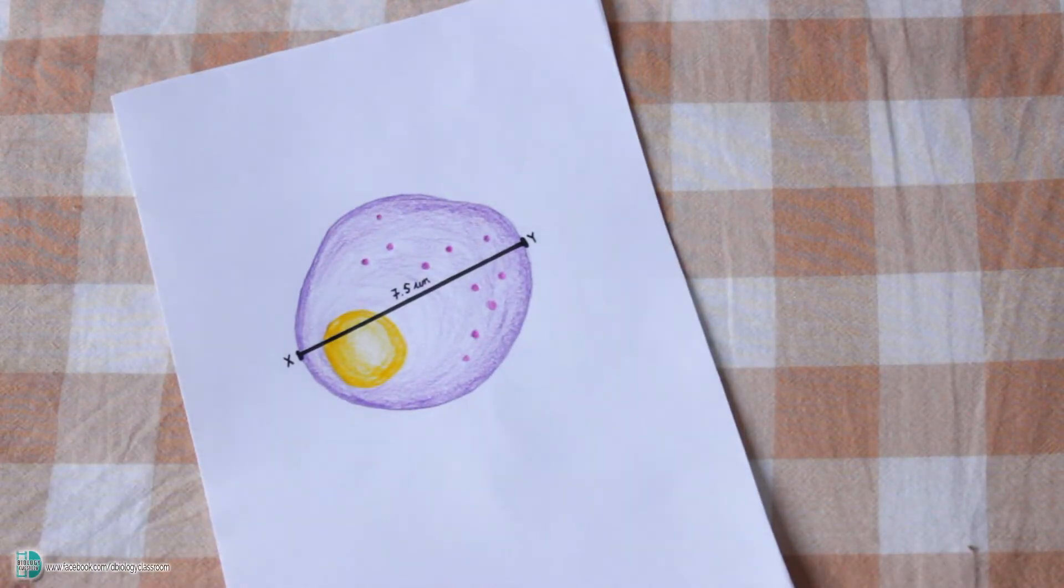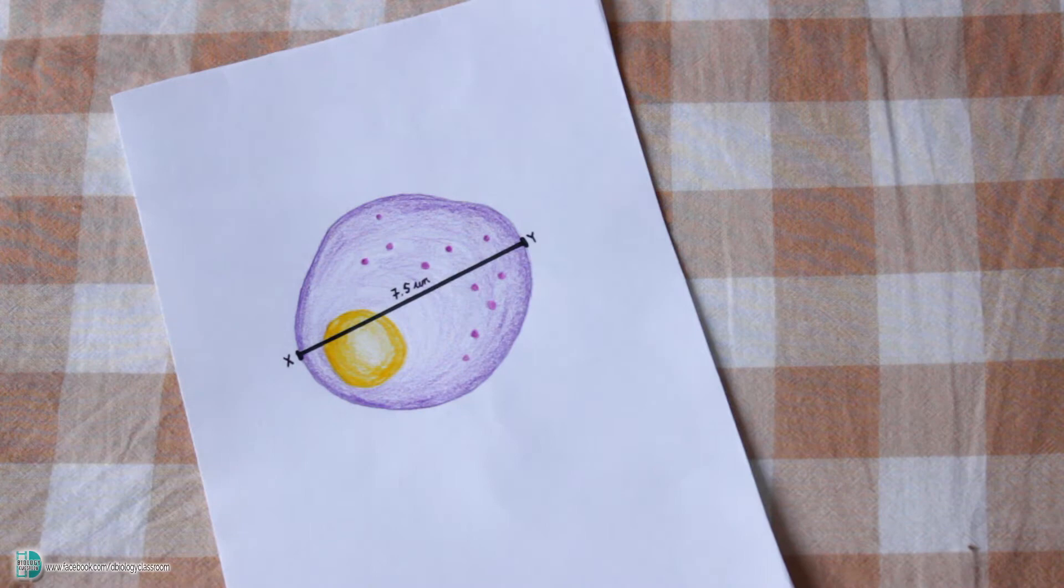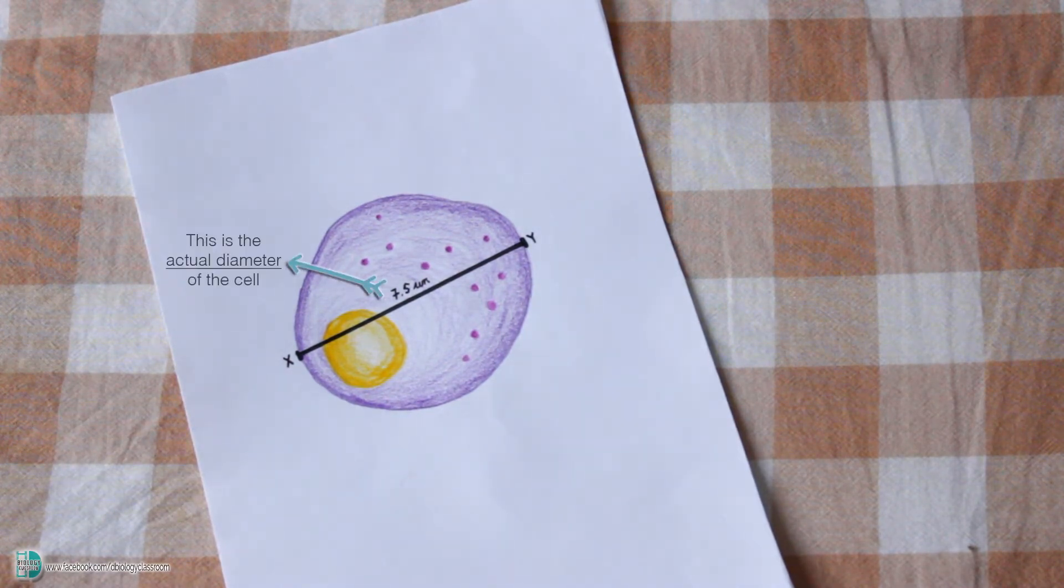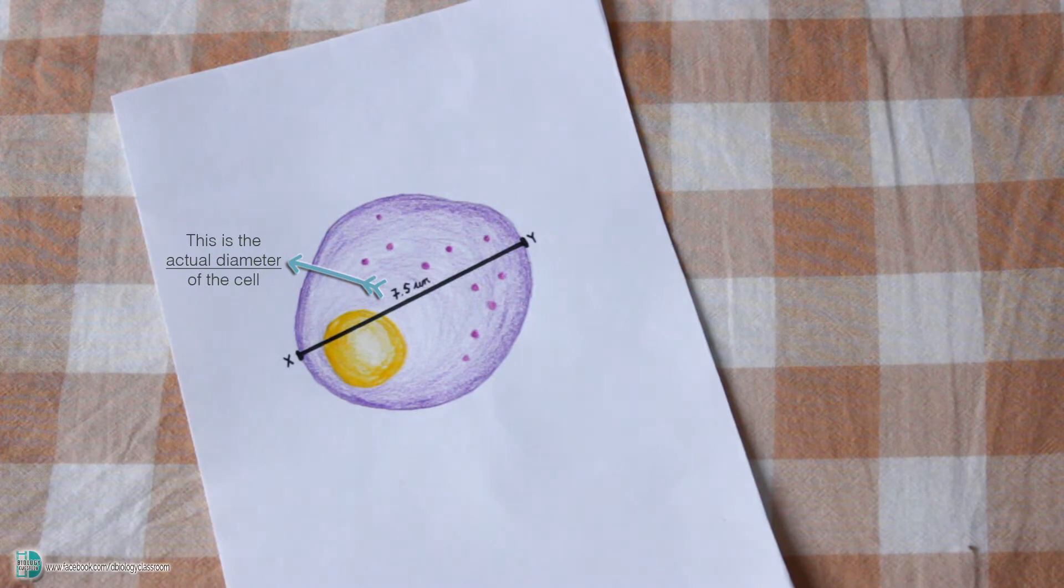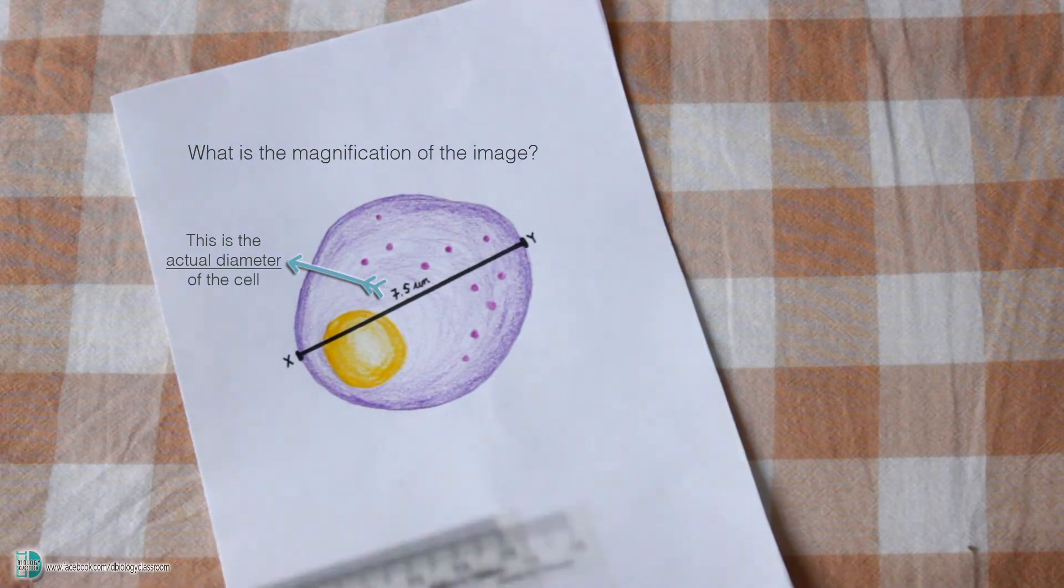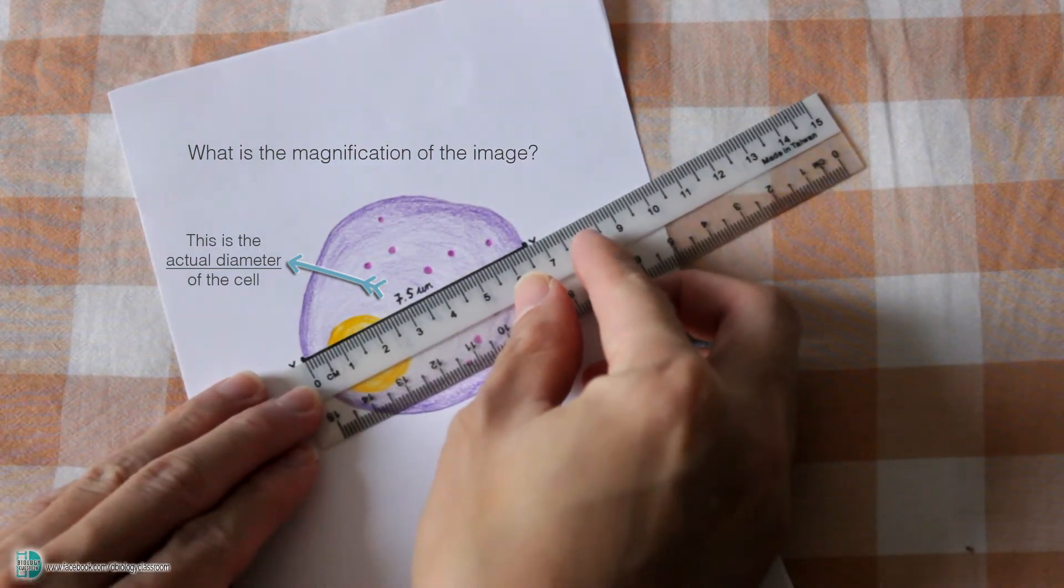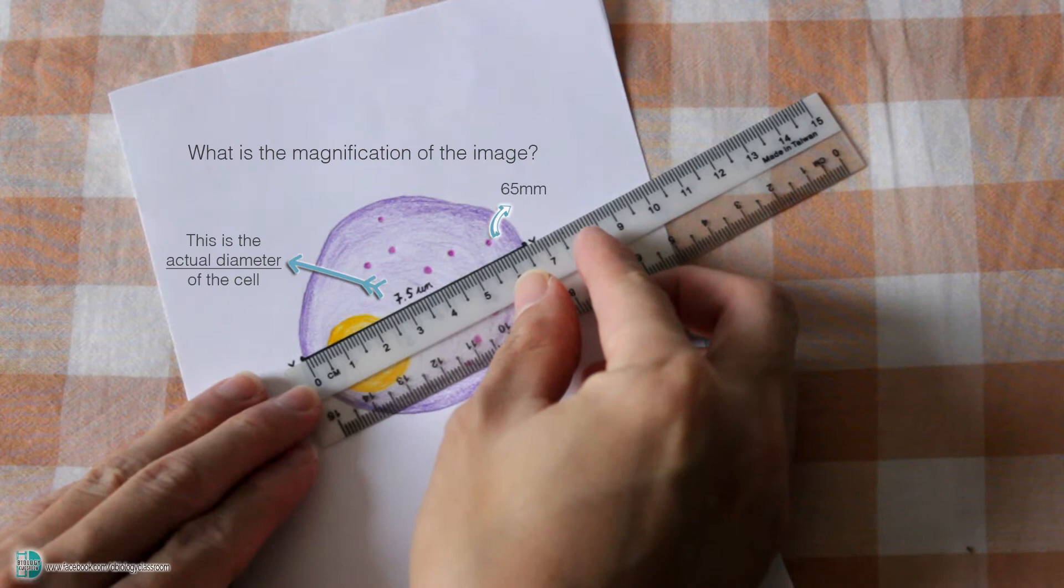Let's say you are given a diagram which shows an animal cell. The actual diameter of the cell from X to Y is 7.5 micrometer. You are required to calculate the magnification of the image. Firstly, measure the diameter of the cell on the diagram. It is 65 millimeter.